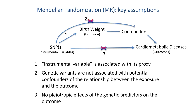One caveat about Mendelian randomization is that the validity of its estimates is predicated on three critical assumptions. First, the genetic variant or variants planned for use as the exposure must be robustly associated with the quantity it is supposed to represent — in this case, birth weight. In the paper under discussion, the main analysis included an instrumental variable consisting of up to 46 single nucleotide polymorphisms, or SNPs, previously known to be associated with birth weight.